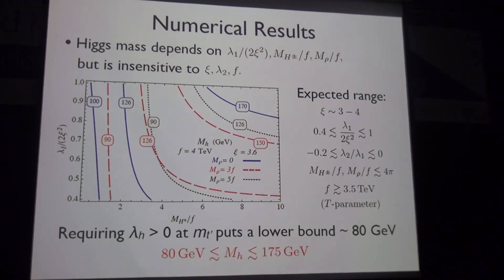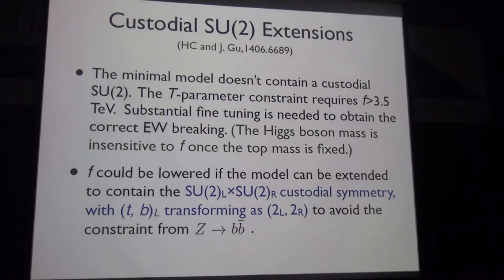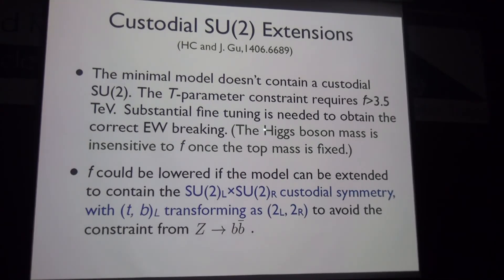In this model the Higgs mass is largely independent of the top partner mass and mostly determined by the top Yukawa coupling scale. However, the model lacks a custodial SU(2) symmetry since it is based on U(3)/U(2). The T-parameter constraint requires the symmetry breaking scale F to be larger than about 3.5 TeV, demanding substantial fine tuning to obtain the correct electroweak symmetry breaking.